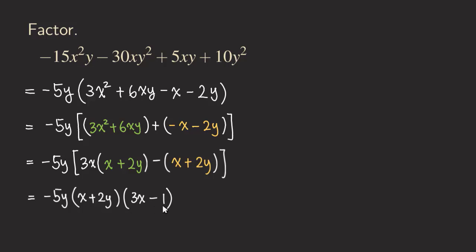So we get three X minus one, and that's finished. The final answer is negative five Y times X plus two Y times three X minus one. This is a slightly more difficult example because we had a GCF to factor out at the beginning. You could skip factoring the GCF first and just do grouping directly, but you would still need to factor the GCF afterward to factor the expression completely. That's it for these three examples and I will continue to do more factoring videos. Thank you for watching — see you next time.